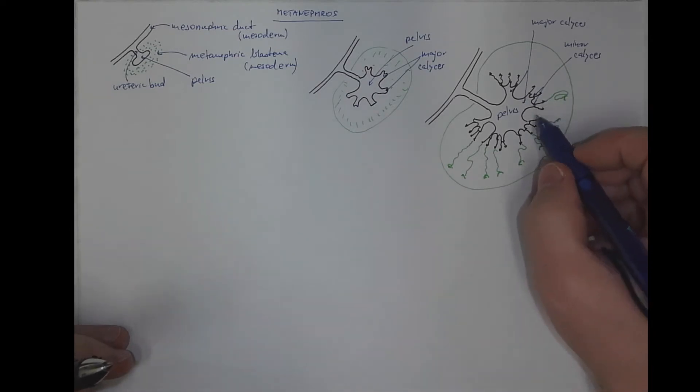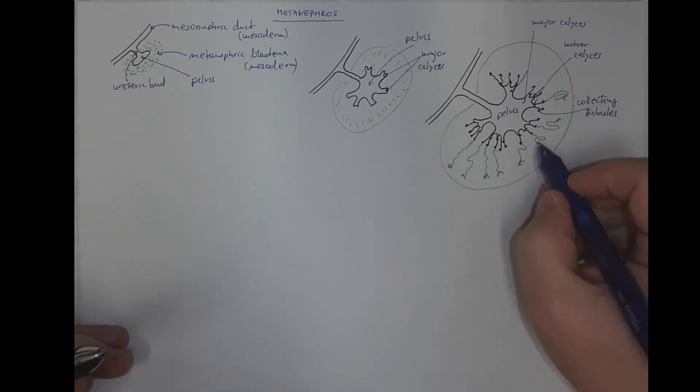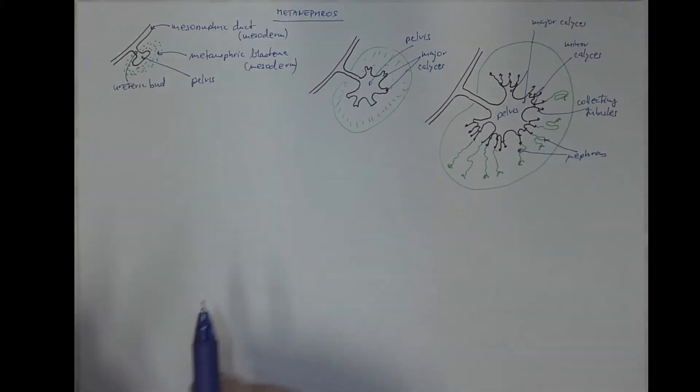And these proliferating structures of the same origin, like the minor calyces, will become the collecting tubules of the kidney. While this will become the nephrons from the blastema.